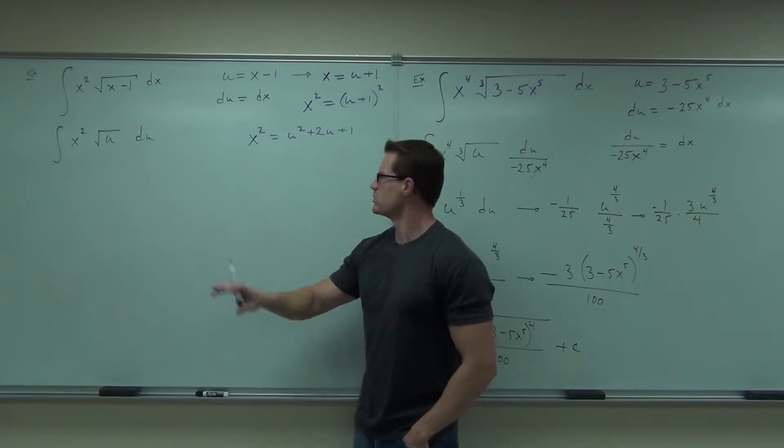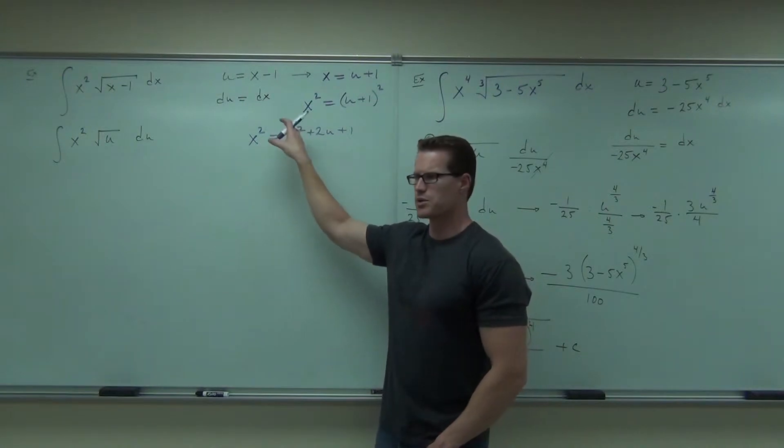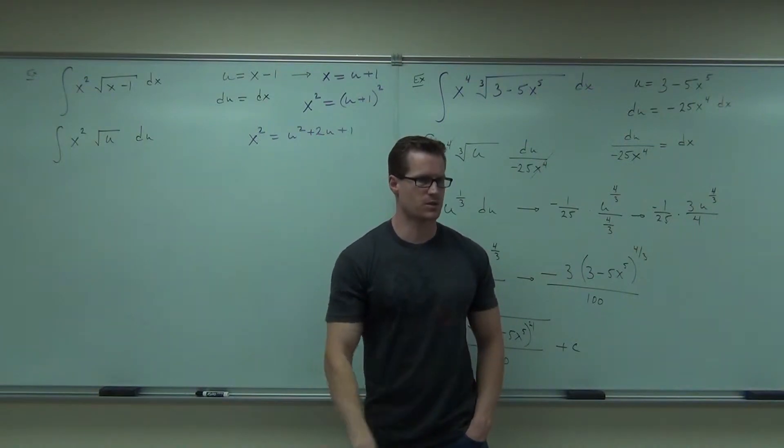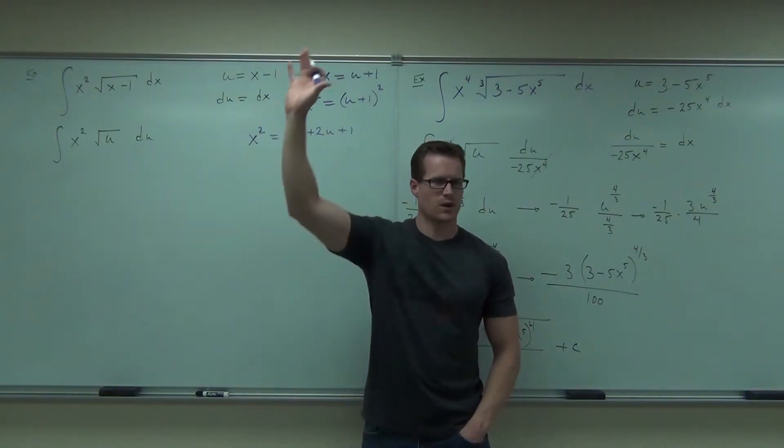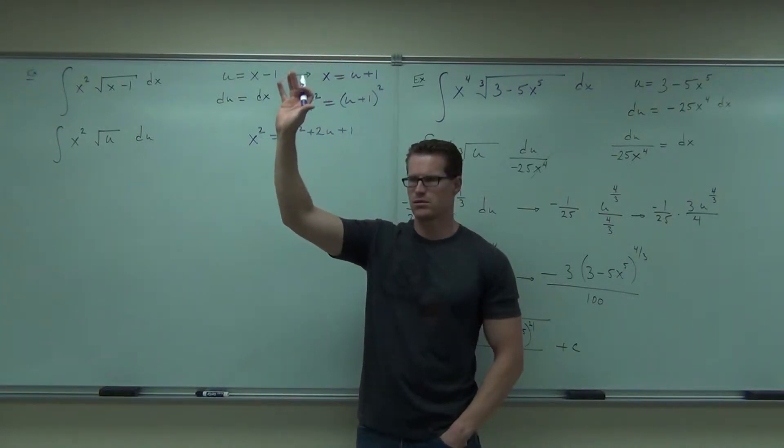Notice there's no dx, there's no du, there's nothing because we haven't done derivatives here. All we're doing is making a direct statement of what x squared is in terms of u. And we got that from our substitution. But a show of hands, how do we feel okay with what we've just done? Have I lost you at all? We're okay? Okay.